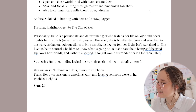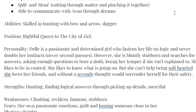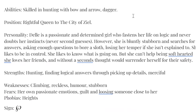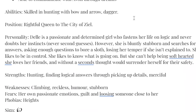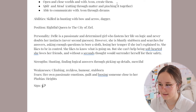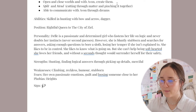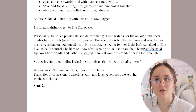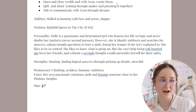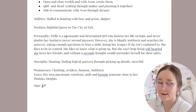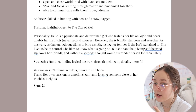And then down below, we have personality. Del is a passionate and determined girl who fastens her life on logic and never doubts her instincts. With personality, you're going to have to flush out their main attributes as a character — their characterization, their growth, and stuff like that. Just note her most noticeable attributes of her personality. I really like having a paragraph format since it gives me a lot of freedom to get to know Del as a person and add little things that make her who she is.